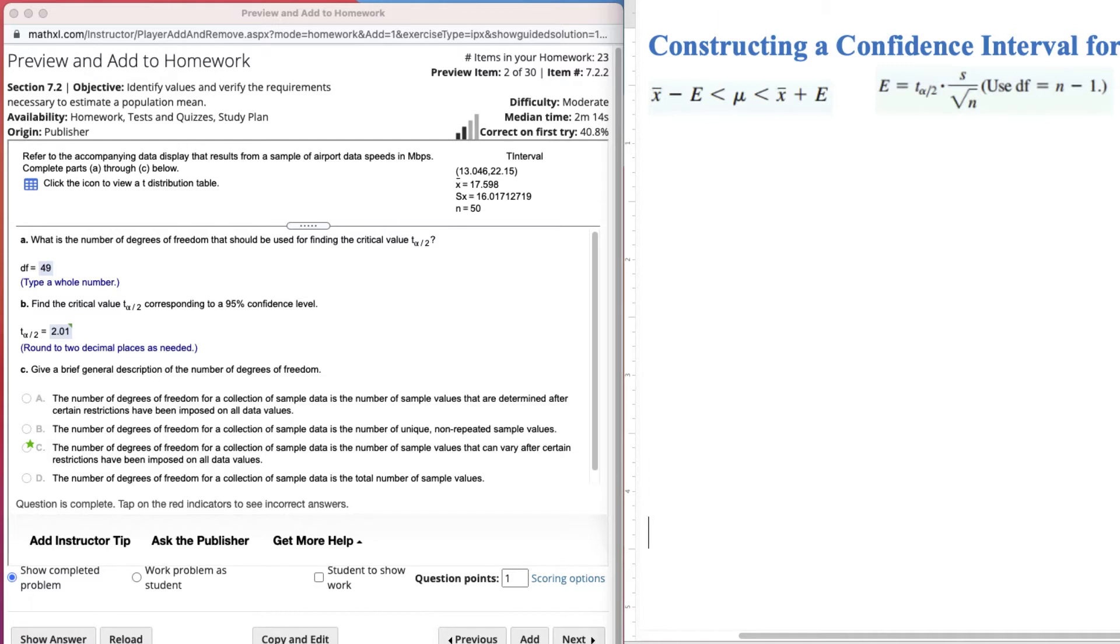Alright, now that we know why we're using the t distribution, now we're going to find out this critical value. So that we can solve for this E, and then we can put it in here and subtract it from the mean and add it to the sample mean. So, t alpha over 2 is the critical value. We see that it is 2.01, but how do we find it?